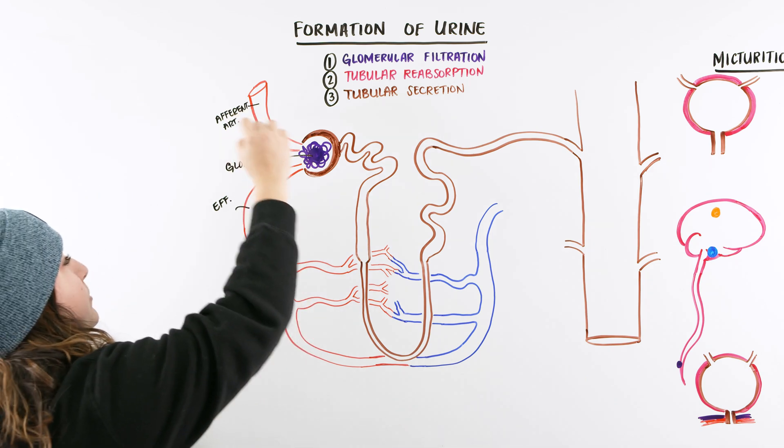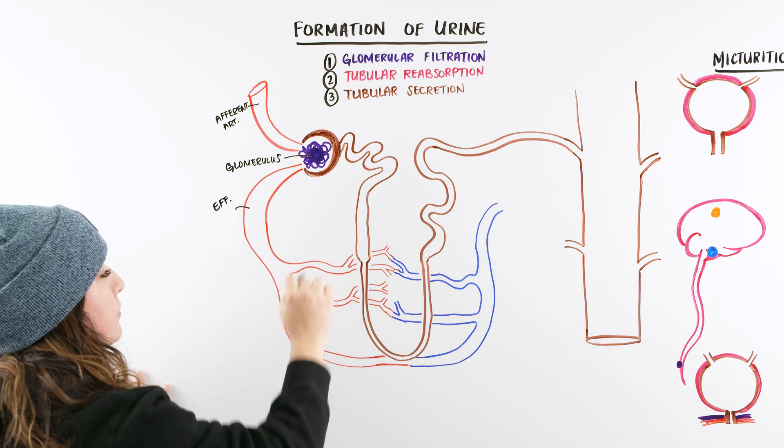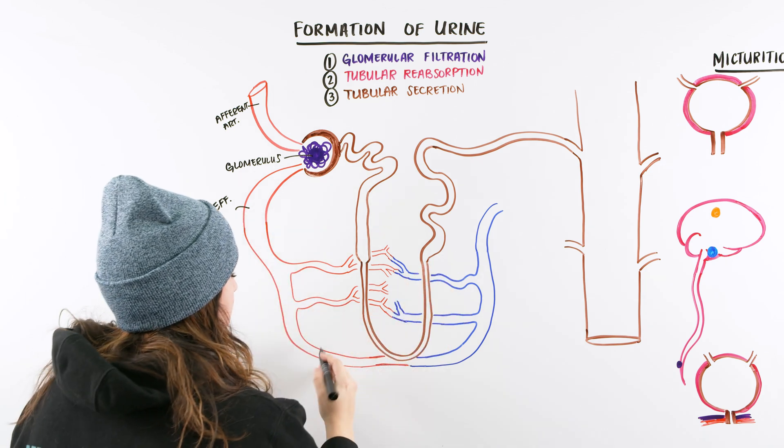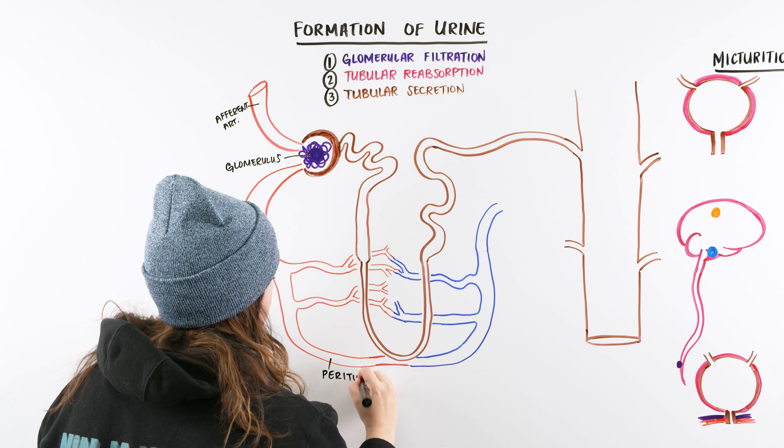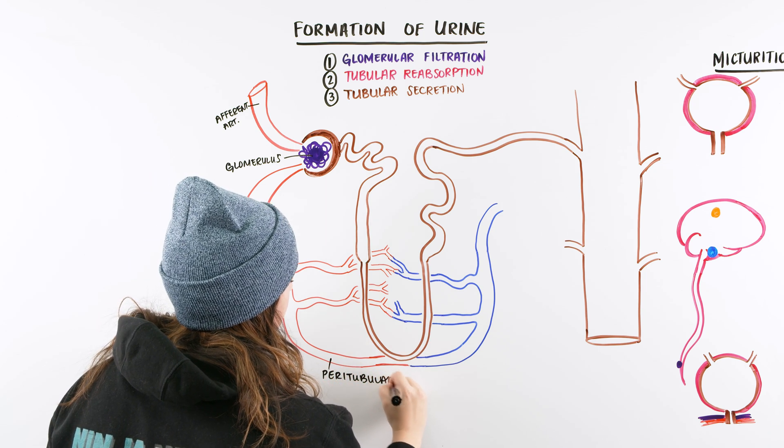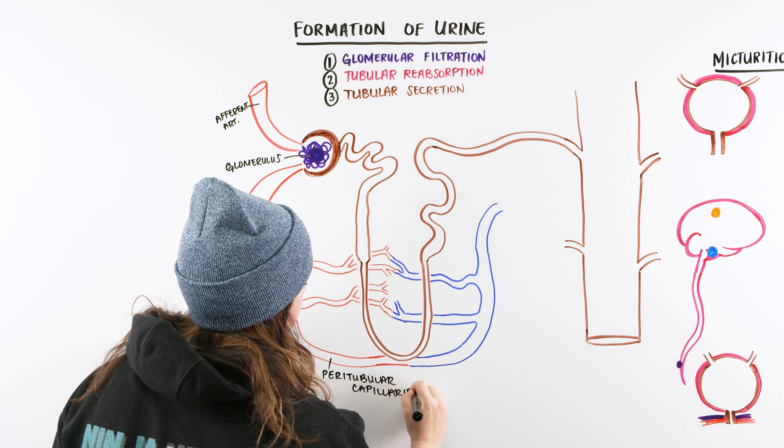But as the blood filters out of our glomerulus into our efferent arterial through our peritubular capillaries, there's also some exchange that occurs there. So what we need to do is just understand how this all occurs.